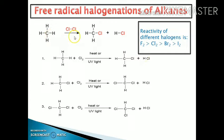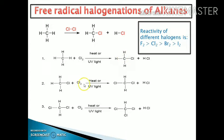For example, when methane reacts with chlorine in the presence of sunlight, a mixture of four products will be formed. All the hydrogen atoms of methane are replaced and we get a mixture of various halogen derivatives. First, chlorine displaces one hydrogen to give chloromethane. If chlorine is in excess, the second hydrogen is also replaced to give dichloromethane, then trichloromethane, and finally tetrachloromethane in the fourth step.